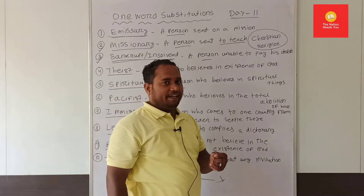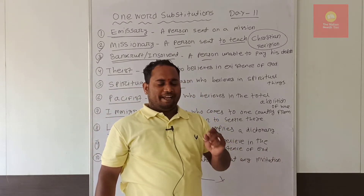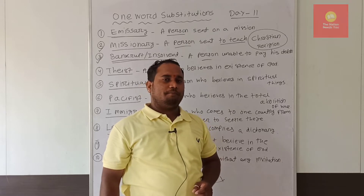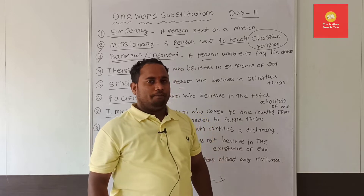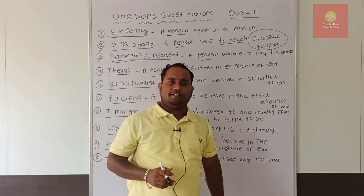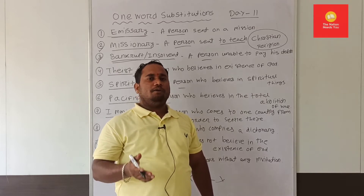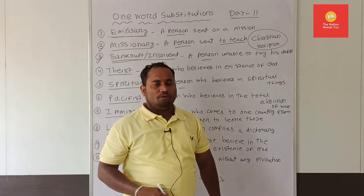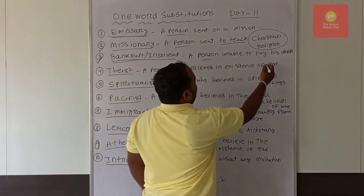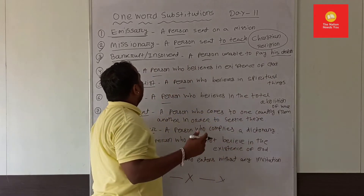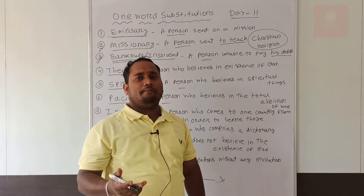Coming to the third word: 'bankrupt,' also known as 'insolvent.' The best examples of bankrupt and insolvent are Vijay Mallya, Nirav Modi, and Mehul Choksi — people who have a lot of debt and interest payments they could not pay. So they become insolvent, meaning a person unable to pay his debts. If you cannot pay your EMI or interest, you become bankrupt.